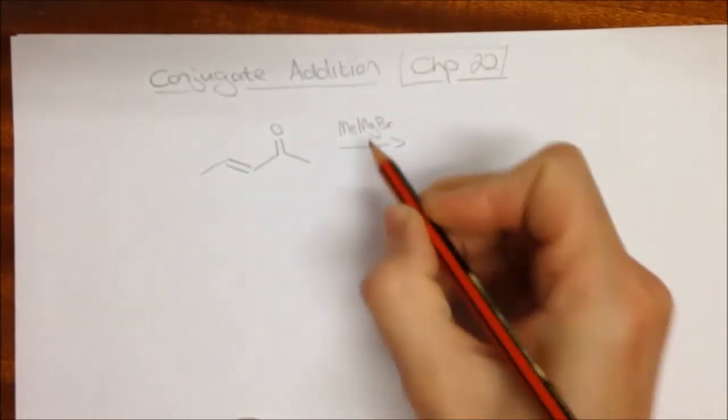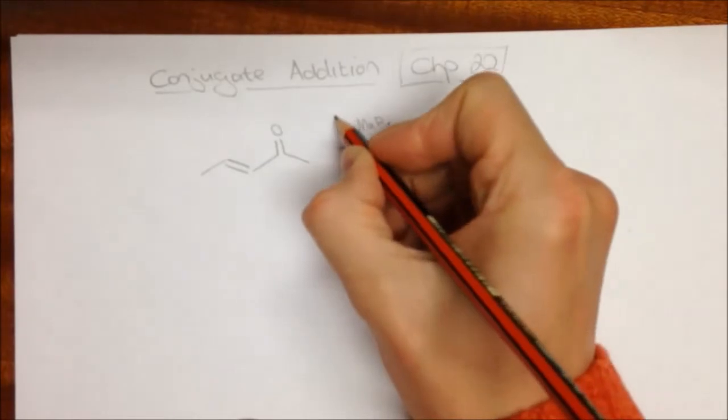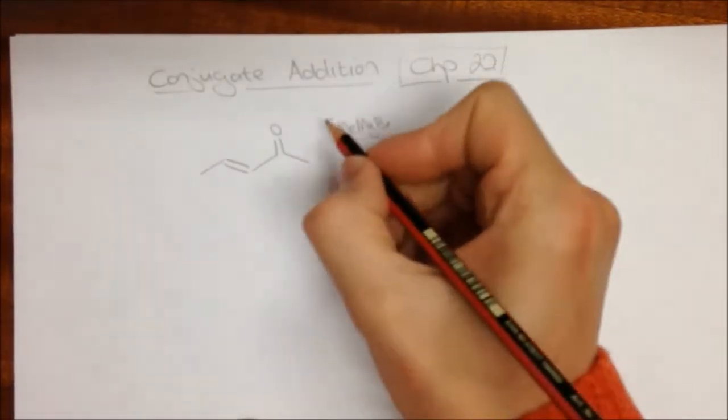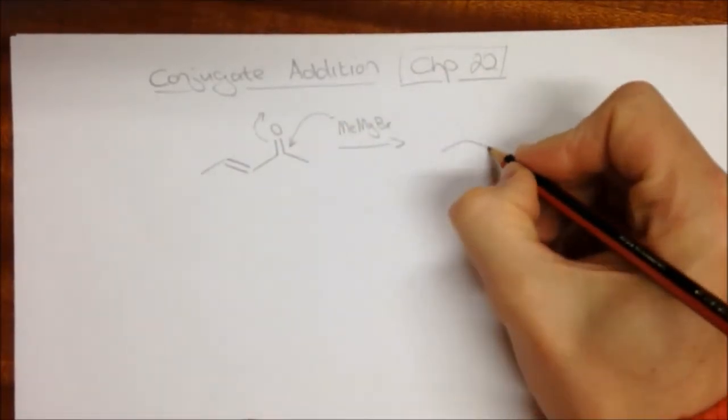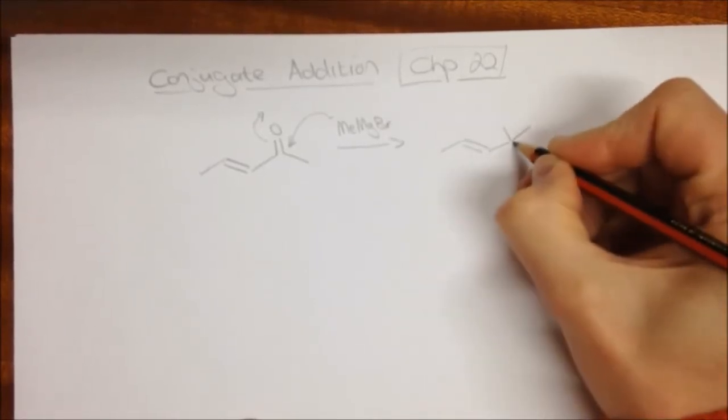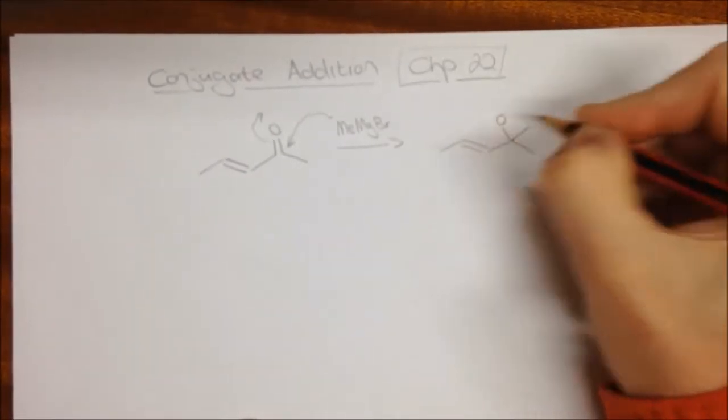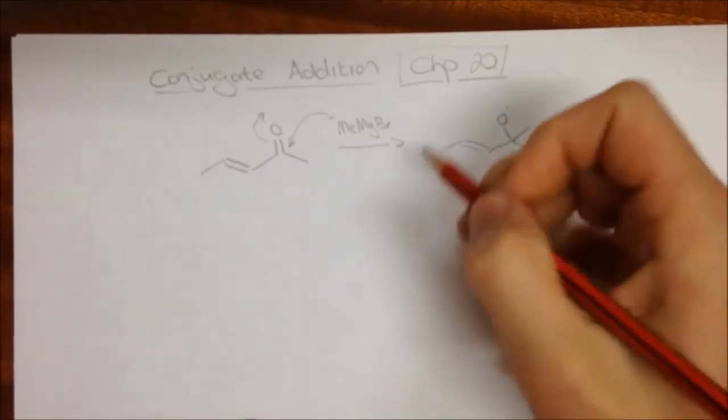It's effectively got a negative charge in it, and we should know that we can draw a mechanism that looks like that, and the product of this reaction would be this over here. A new methyl group is added on, and we have an O minus, and of course in workup...